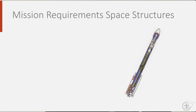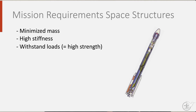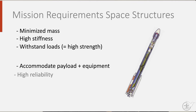Structures must have a low mass with high stiffness and high strength. The vehicle must also be able to accommodate payload and equipment and must have a very high reliability. Most spacecraft are on a one-of-a-kind mission and carry expensive equipment, making failure a very costly mishap. An Ariane 5 rocket that fails costs an estimated 220 million US dollars.